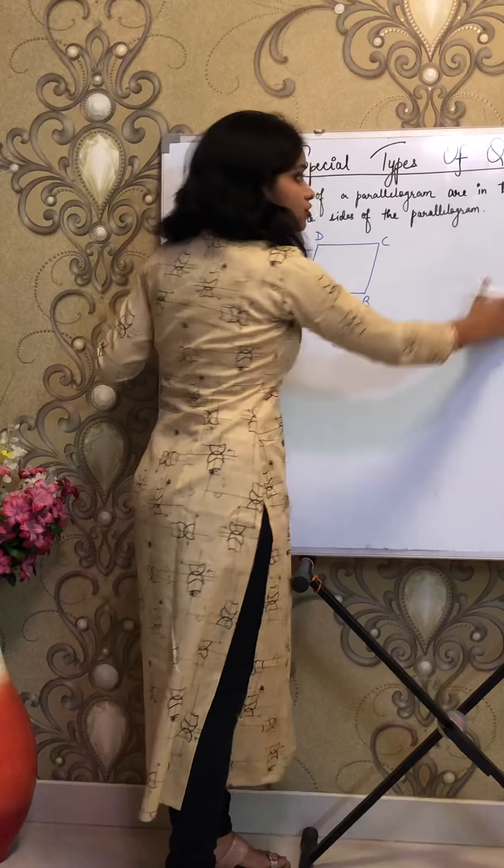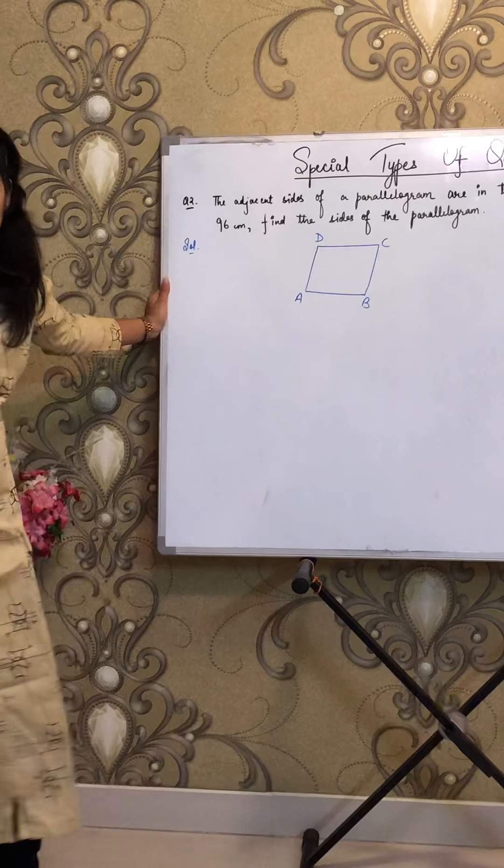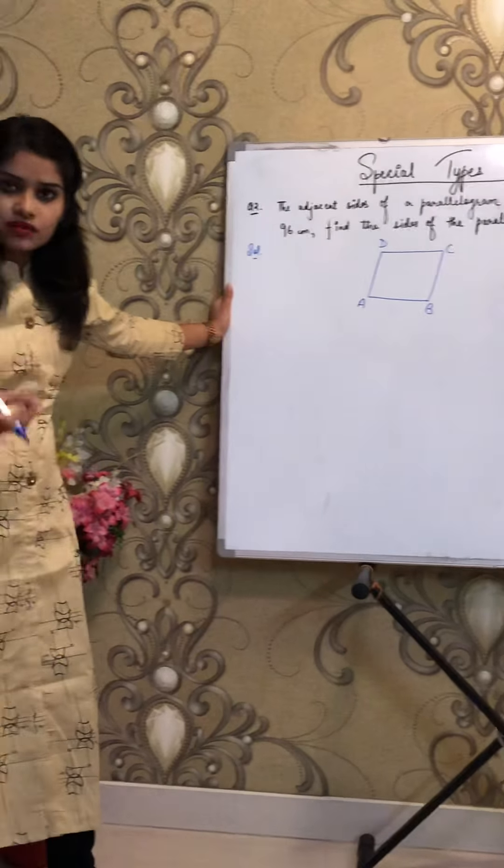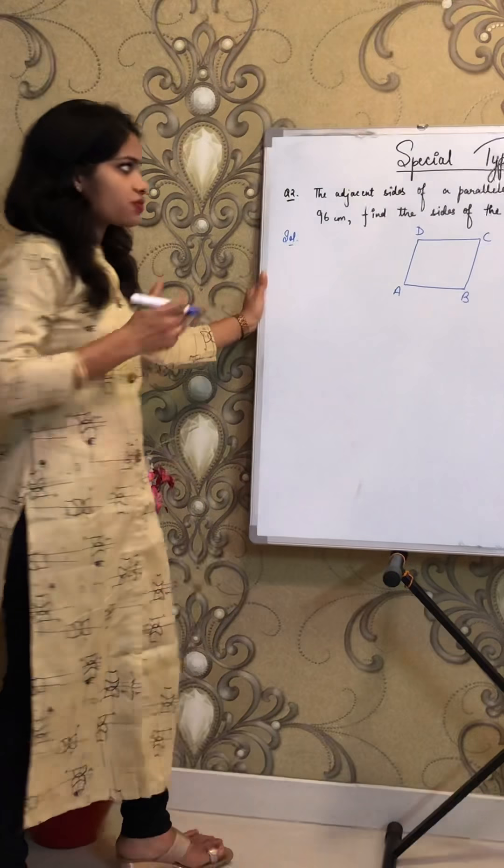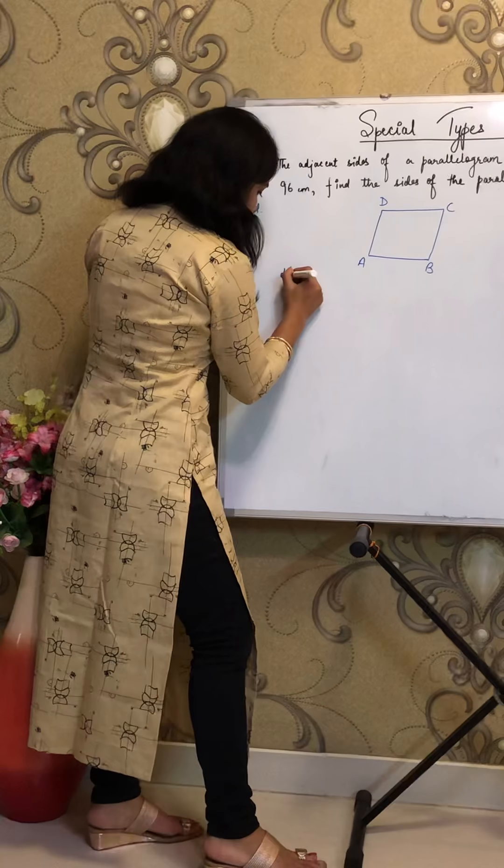First of all see, if the sides are in the ratio 5 is to 3, so let the sides as 5X and 3X. Remember this will be useful in your other questions also.